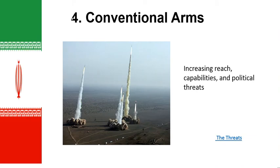Conventional arms are important — it's not just an issue of nuclear arms. People who study Iran are concerned about their conventional arms, the increasing reach capabilities, and political threats made through conventional arms. Iranian missiles are becoming more sophisticated with longer reach, able to reach Europe, and Iran is working on missiles that could reach the United States. Beyond missile technology, the Army, Navy, use of drones, et cetera, are all aspects to be looked at and understood.